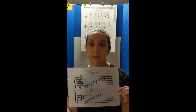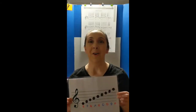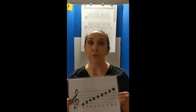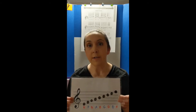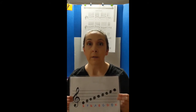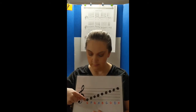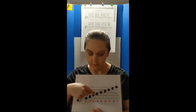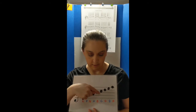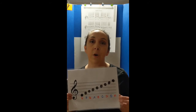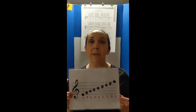Looking at the notes on the treble clef, we're going to read them all off and then talk about ways you can remember them. Starting at the bottom line and moving up, counting lines and spaces, it begins with E, then F, G, A, B, C, D, E, and F. Those are all of the lines and spaces on the treble clef — all the note names.